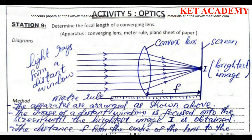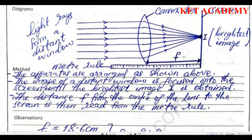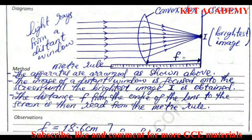Mark that point on the metal ruler, then repeat the procedure two to three times and take an average. To report your experiment, the steps are: first, apparatus are arranged as shown; second, the image of the distant window is focused on the screen — which is the white sheet of paper — until the brightest image is obtained; third, the distance f from the center of the lens to the screen is read from the metal ruler.